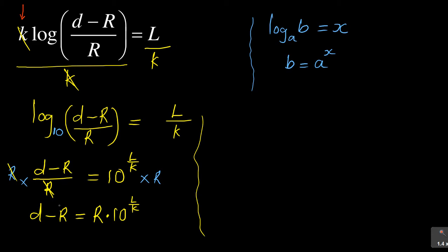And then finally, if I want to remain with d, the R will jump the equal sign, so I have now my d is equal to R plus R times 10 to the power L over k. I can even go on to factorize the R and say this is equal to R times (1 plus 10 to the power L over k).